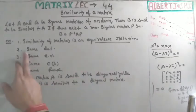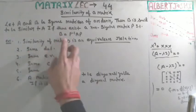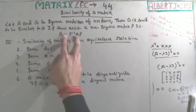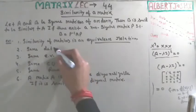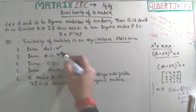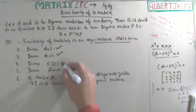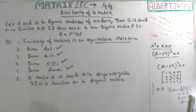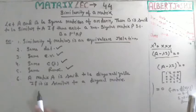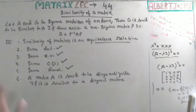Second, if two matrices are similar, then they must have the same determinant, the same eigenvalues, the same characteristic polynomial, and the same rank. Also, a matrix A is said to be diagonalizable if it is similar to a diagonal matrix.